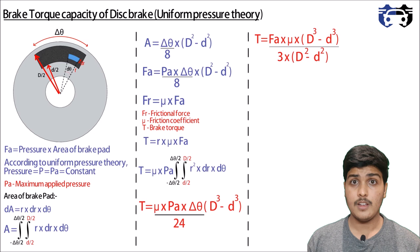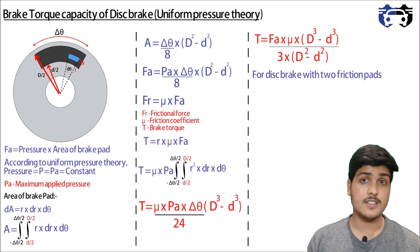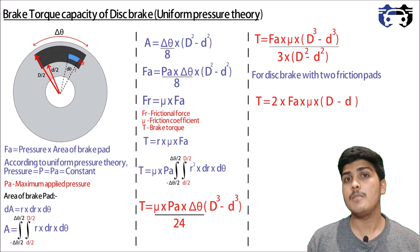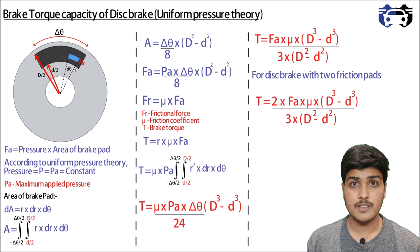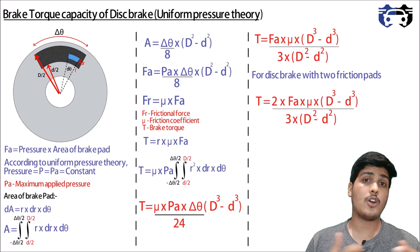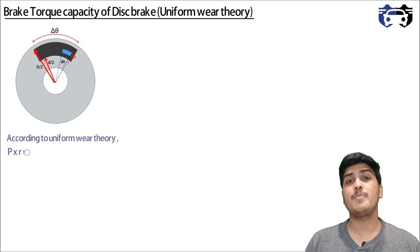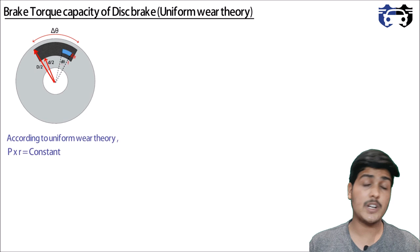Solving these two equations gives torque equals fa multiplied by mu divided by 3, multiplied by (D³ minus d³) divided by (D² minus d²). A disc brake has two friction surfaces, so the torque capacity is given by 2·fa·mu/3 multiplied by (D³ minus d³)/(D² minus d²). This is the brake torque capacity for the disc brake as a function of the applied force, valid for new brake pads. For older brake pads we use the uniform wear theory.